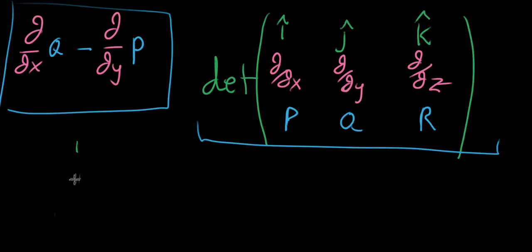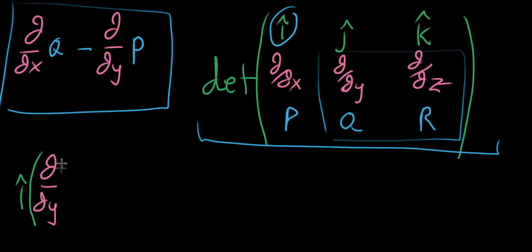If you're computing the determinant of the guy that we have pictured there in the upper right, you start by taking this upper-left component and then multiplying it by the determinant of the sub-matrix whose rows and columns are not the row and column of i. So we're gonna take that unit vector i and then multiply it by a certain little determinant. What this sub-determinant involves is multiplying ∂/∂y by r, which means taking the partial derivative with respect to y of the multivariable function r, and then subtracting off the partial derivative with respect to z of q. So that's the first thing that we do.